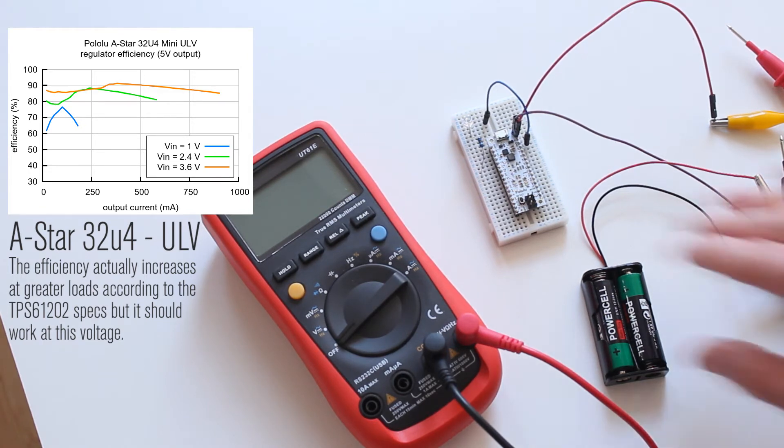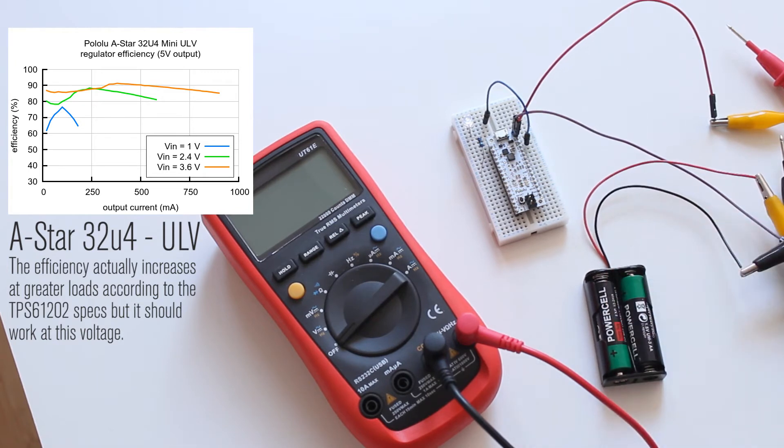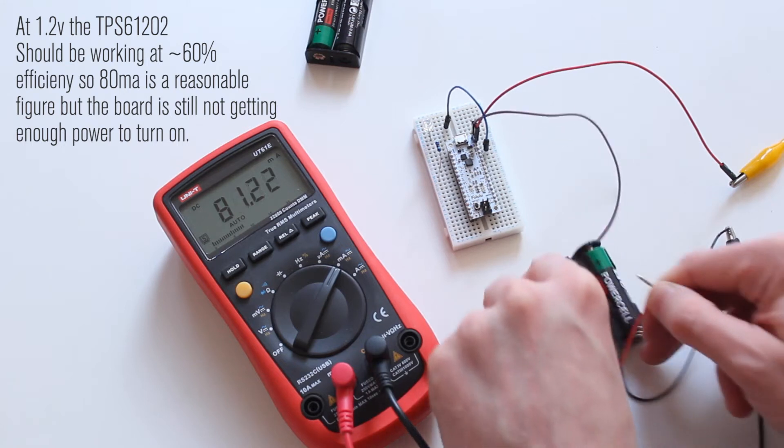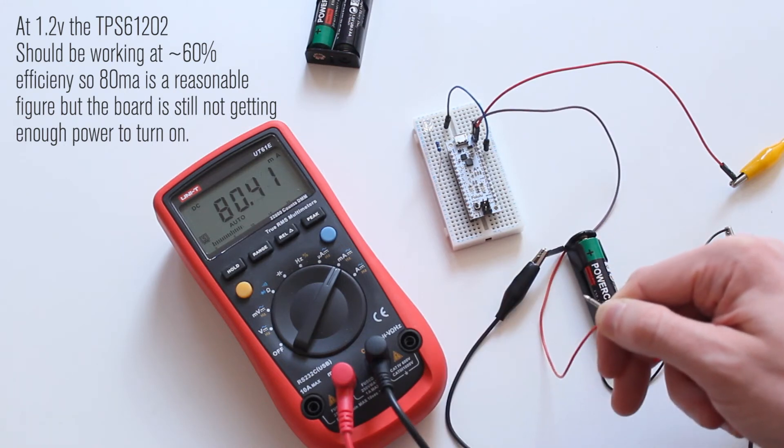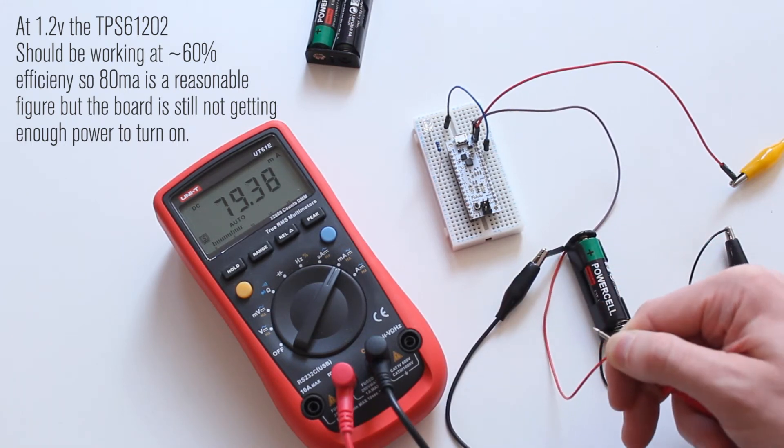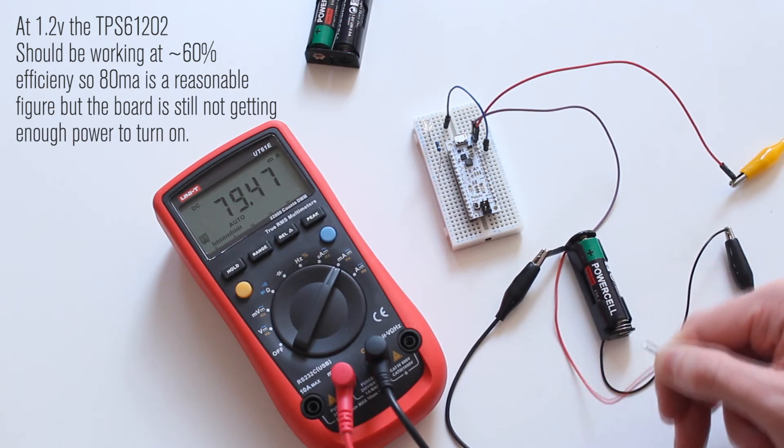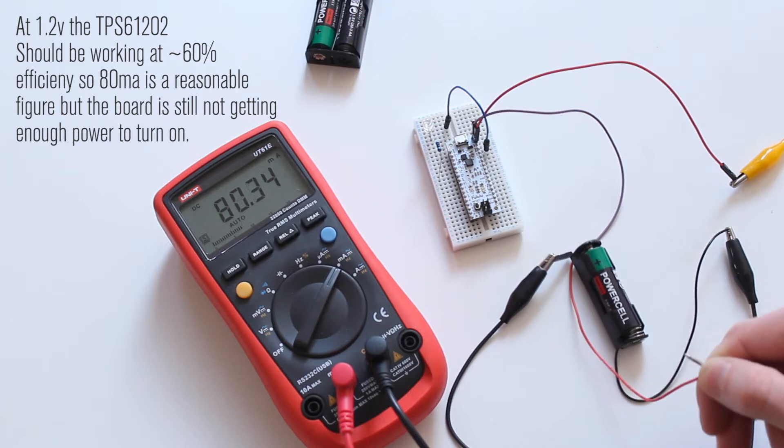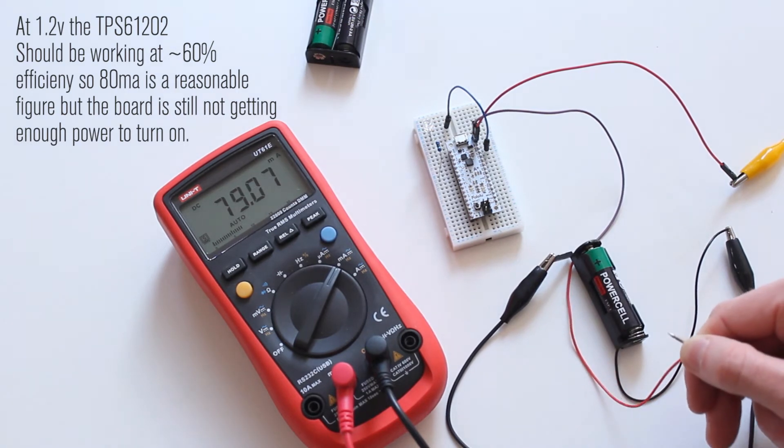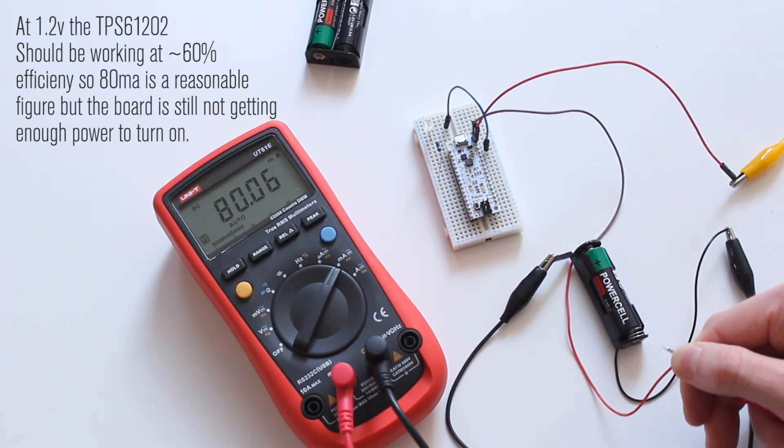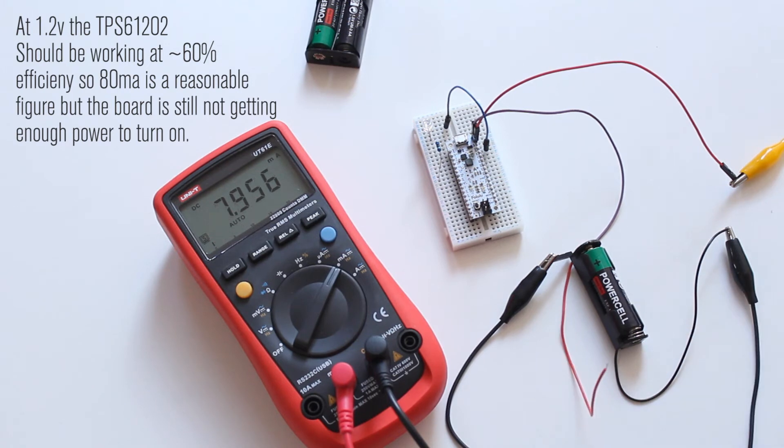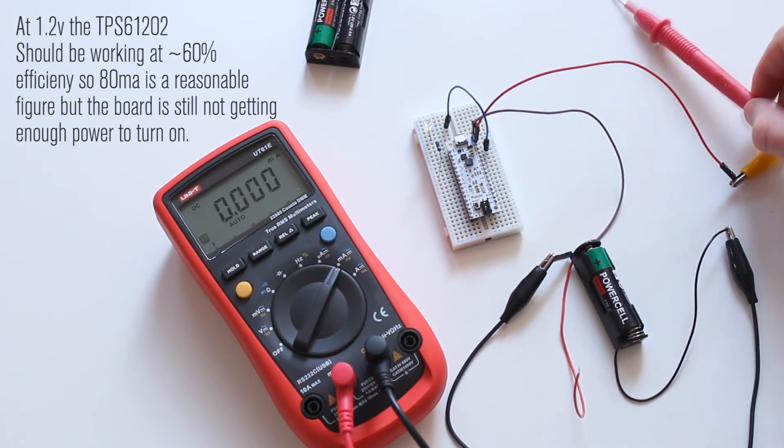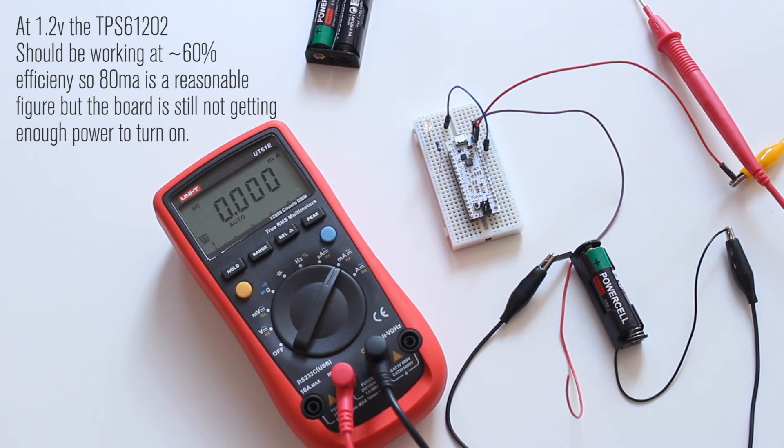So it does claim to work down to 0.5 volts but it doesn't seem to be displaying that. So with this single AA battery it is drawing 80 milliamps but it's still not turning on. So I'm not sure what that means honestly. But it doesn't seem to display the 0.5 volt advertised lowest voltage. I don't know what the lowest voltage would be. But we can hook it up to a power supply and find out.